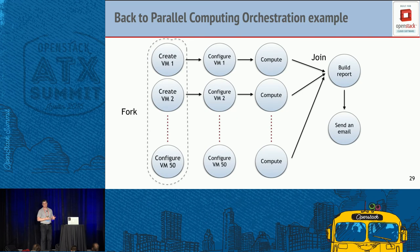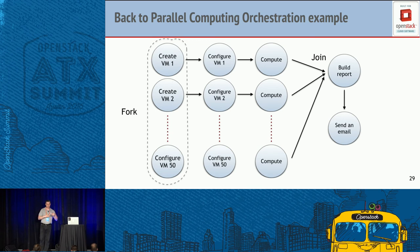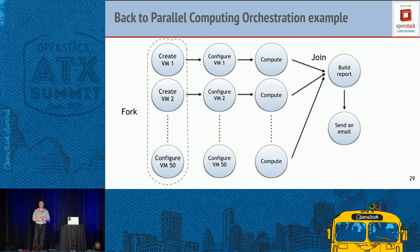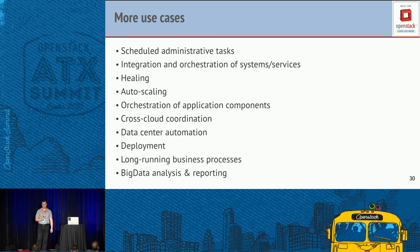Getting back to my parallel computing orchestration example: we now have answers to all of those earlier questions. We can build a workflow for it — we know how to fork, how to do things in parallel, how to reconcile results. The Mistral API lets you see exactly what's running, what finished successfully or with failure, and we can recover from errors. At Nokia we have different kinds of healing workflows, autoscaling, and lots of other things. If you find something familiar here, the right answer may be using Mistral Workflow Service.